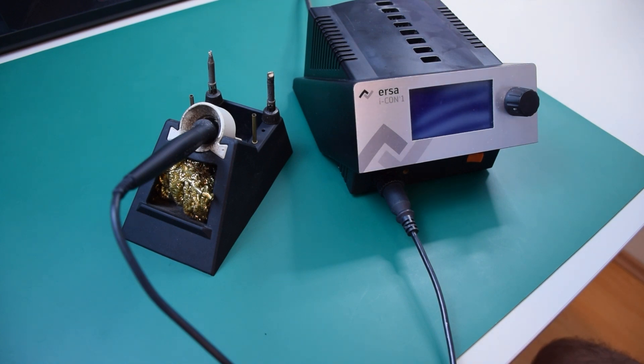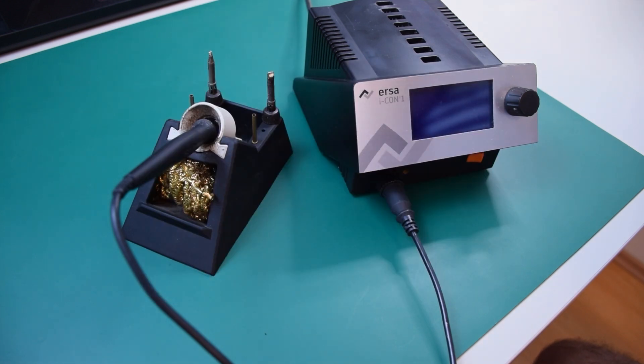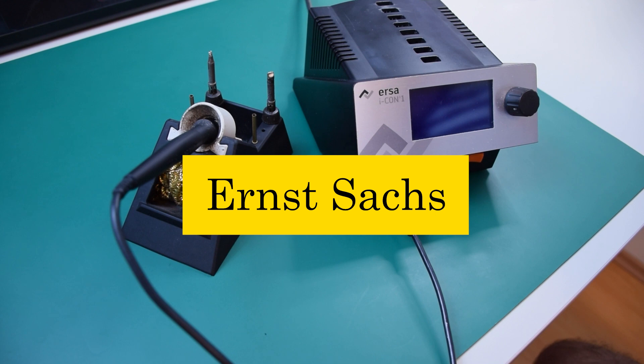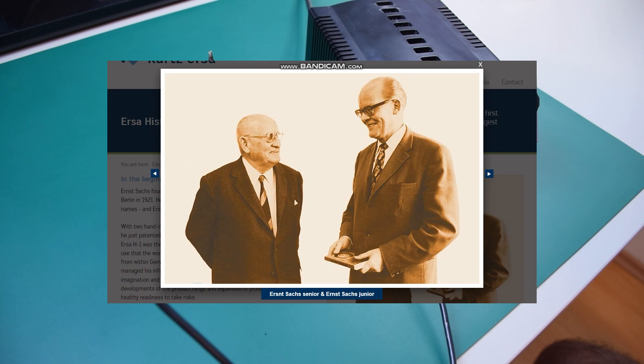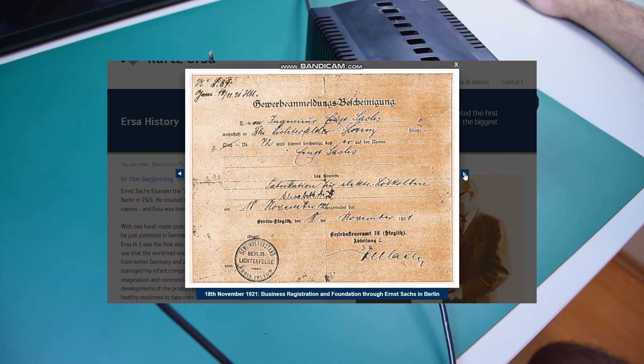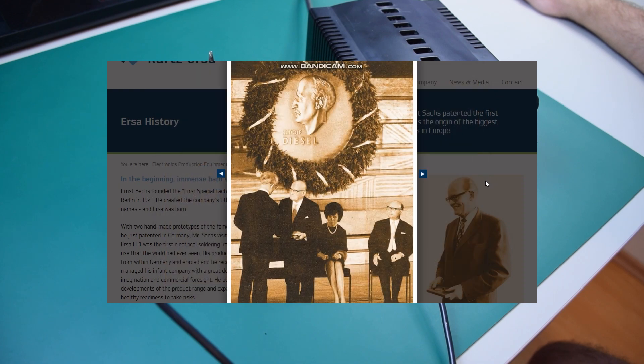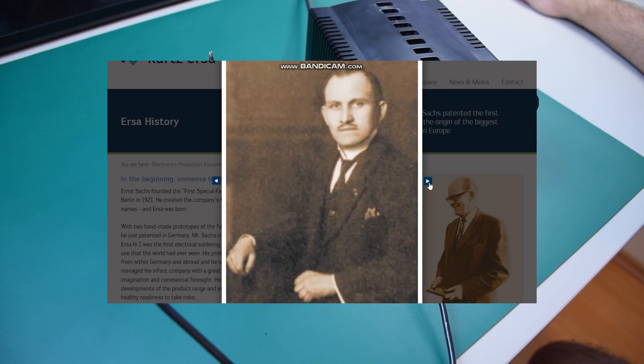And this is the Erza Icon 1. Erza is German, the company was founded in Berlin more than 100 years ago. I just found out the name comes from Ernst Zacks. Maybe I will find a photo of him. Yes. Here's Ernst with his son. Lötkülben in German. Ja, danke sehr. Hello, Ernst.